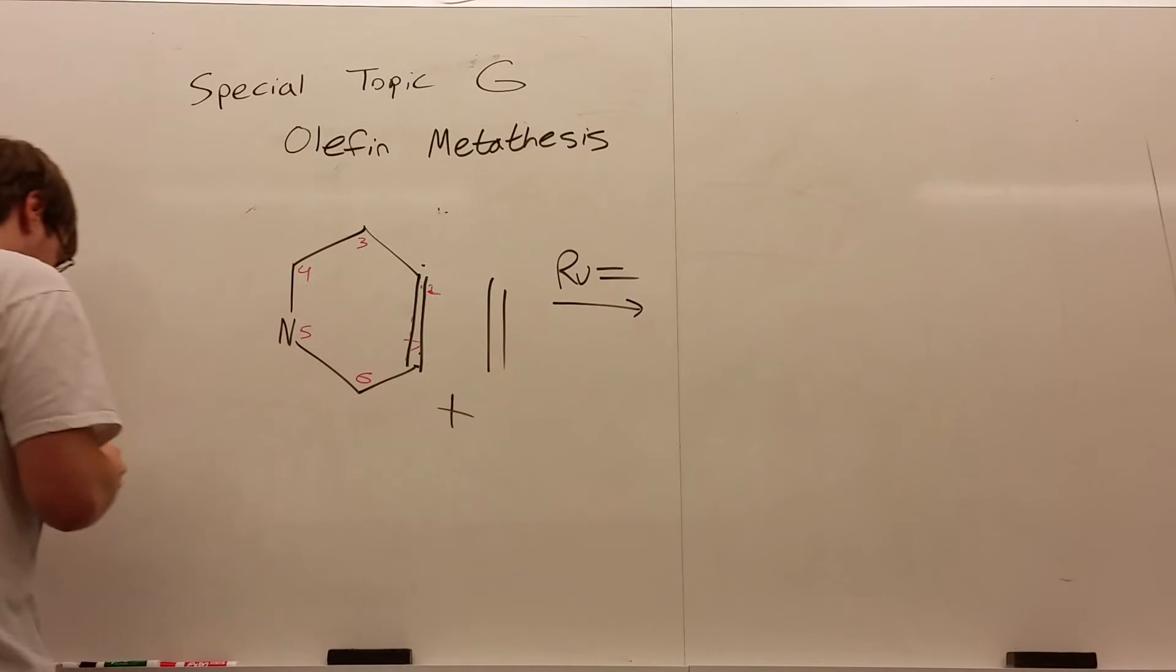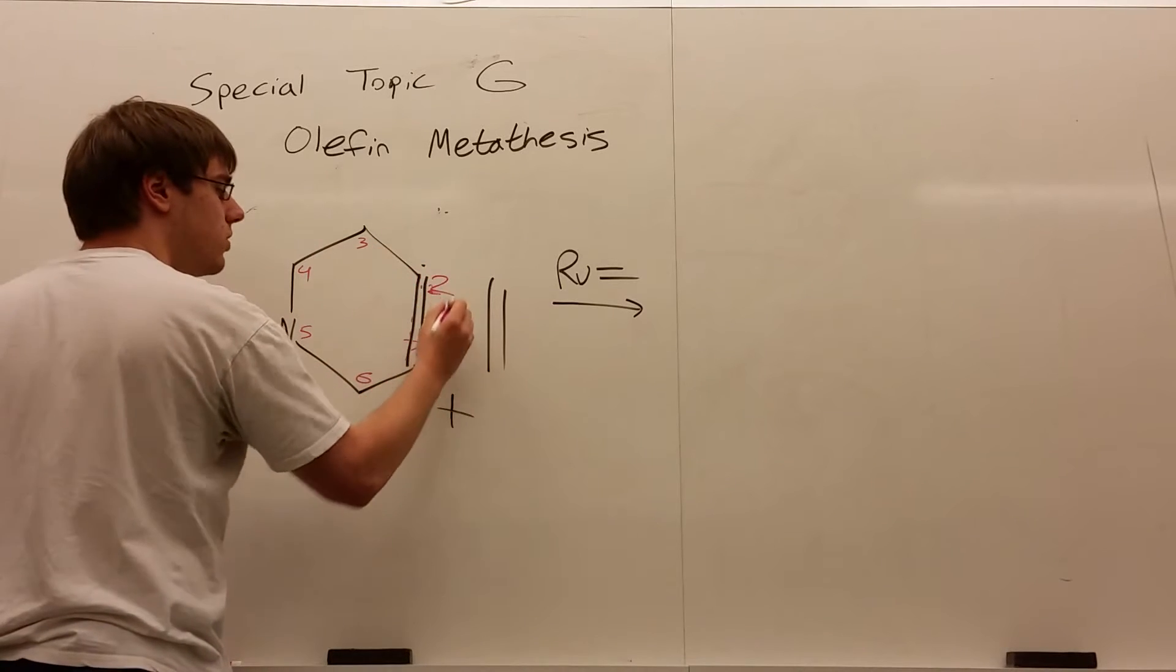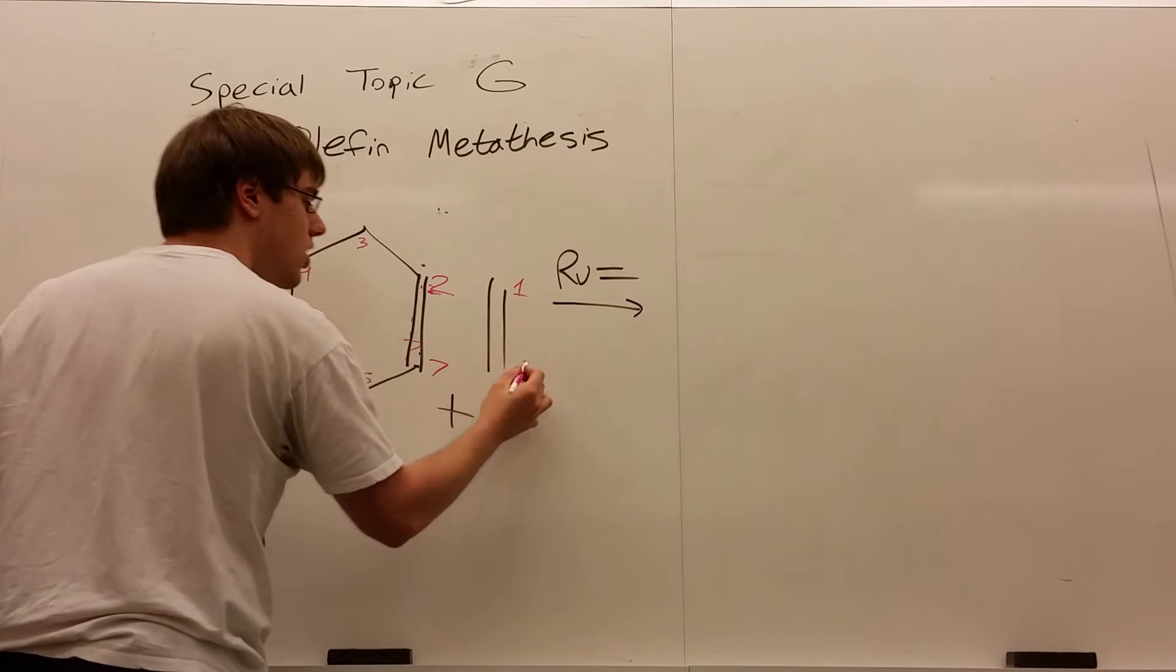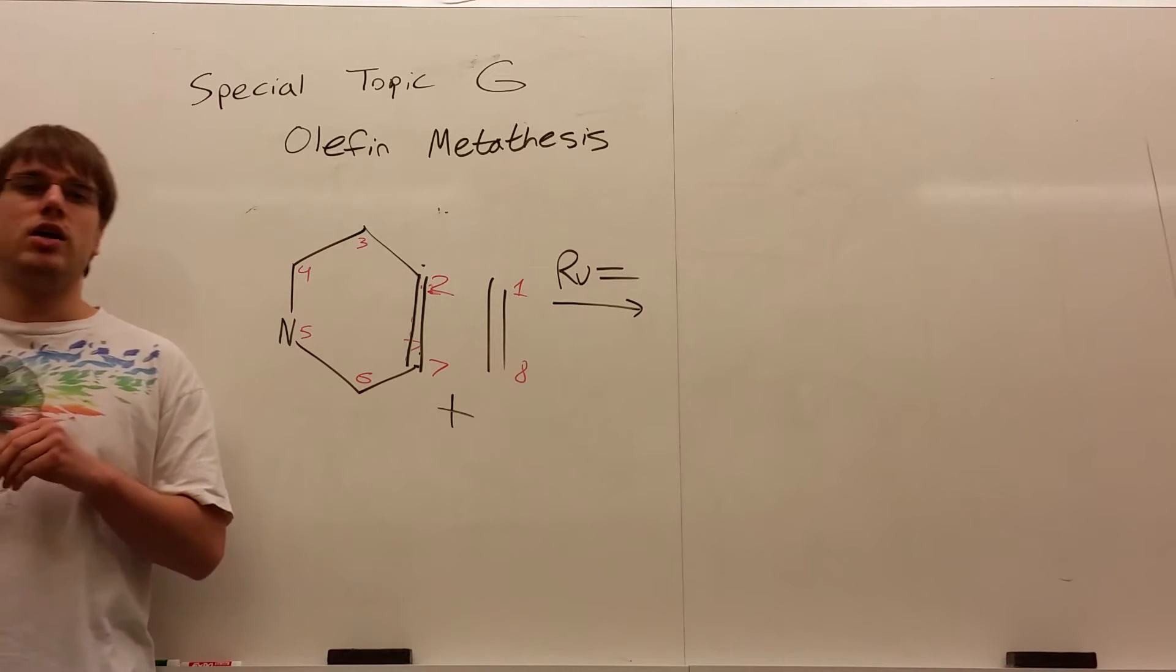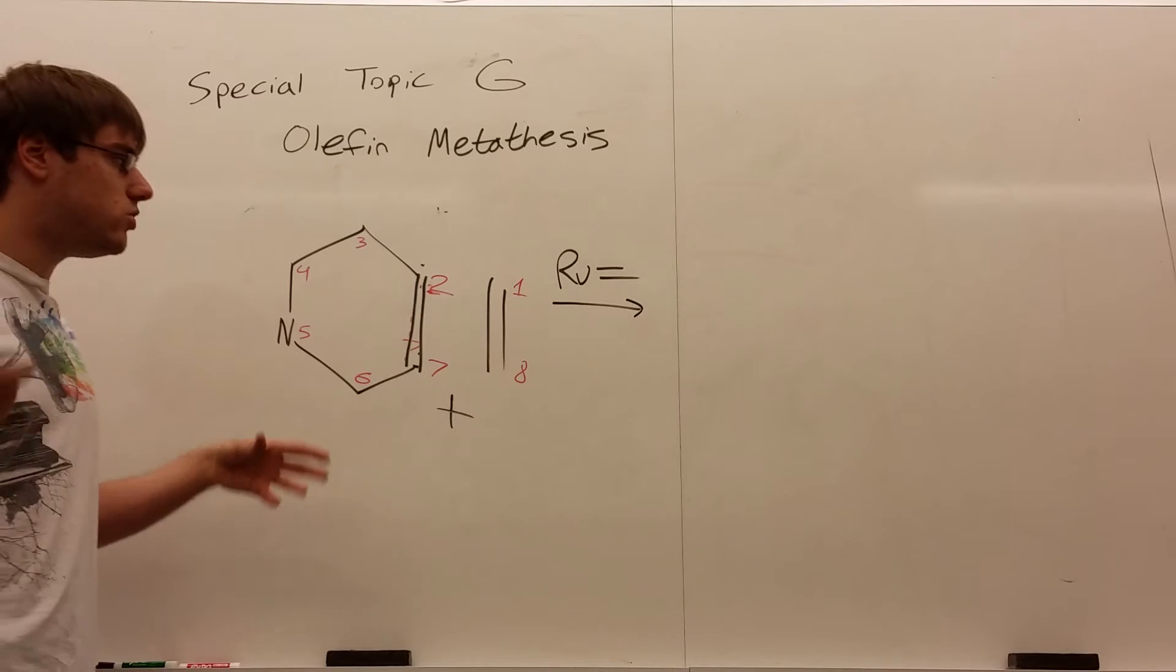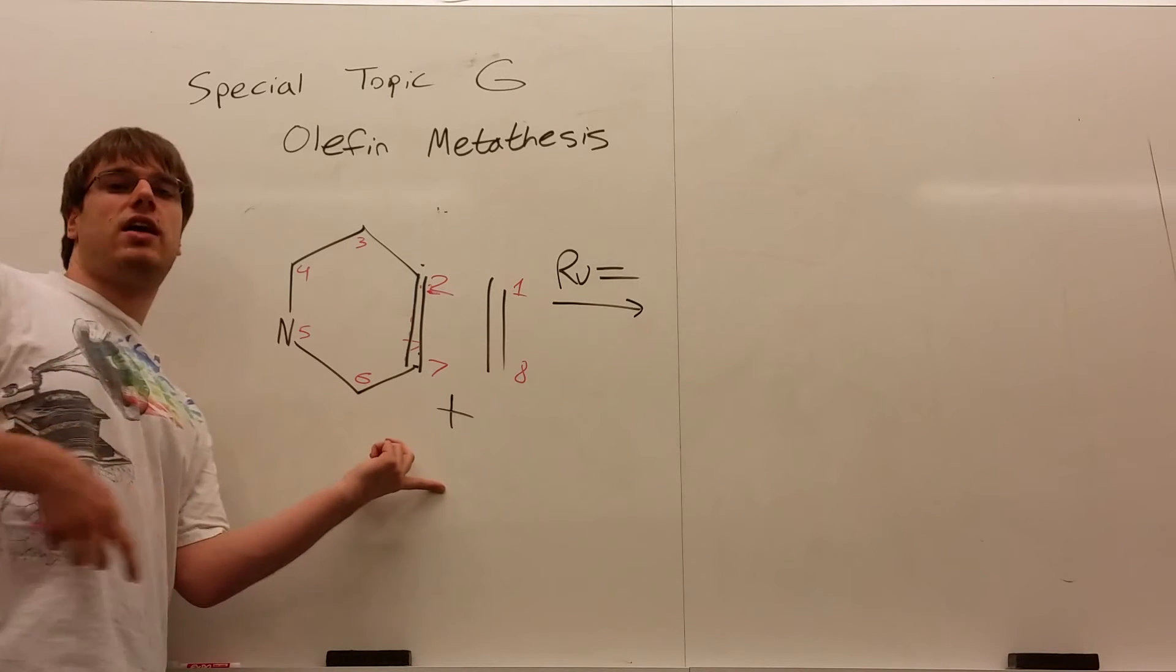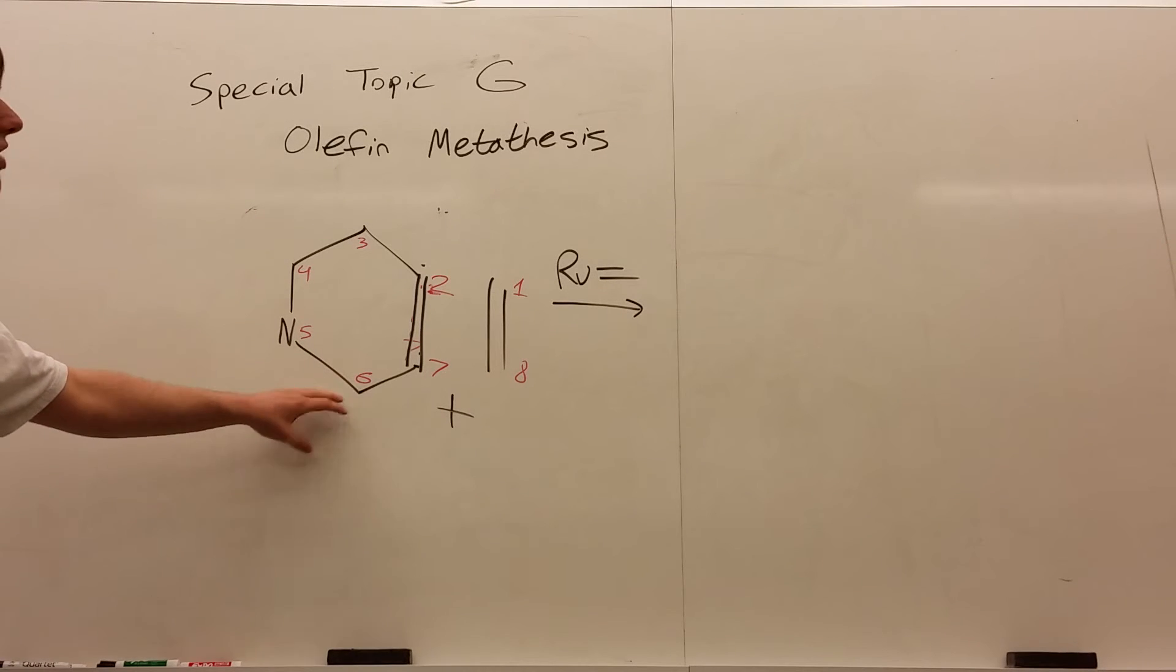And these would be my two products. So the two ways you're going to see olefin metathesis used is one to break apart a chain or break apart a ring or something, and the other way you can do it is to create a chain or create a ring. And this is the example where you create that ring. And this ability to create rings is actually fairly helpful in synthesis problems.